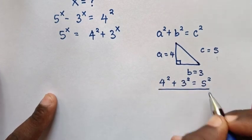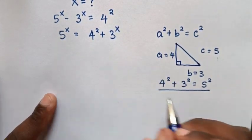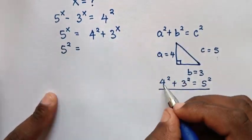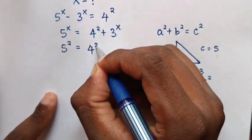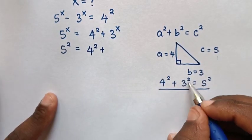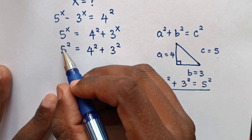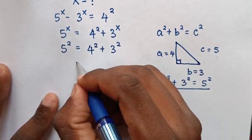Then we compare with our equation, so in our equation it will be 5^2 = 4^2 + 3^2. Then we compare, so from here, same base, 5 power x is equal to 2.